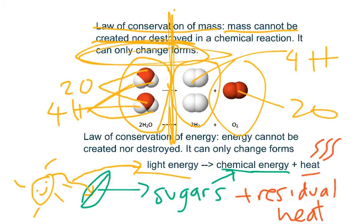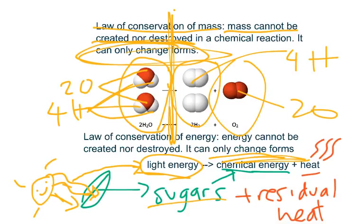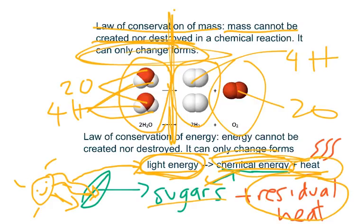Now let's look at the law of conservation of energy. This states that energy cannot be created nor destroyed in a reaction — it can only be converted into other forms. For example, light energy from the sun goes into the leaf, and the leaf converts it into sugars, while some light energy is released as residual heat. So the light energy is converted into chemical energy in the form of sugars and heat. Energy is not created nor destroyed — it's just changing its form. That's all for this video. Have a nice day.